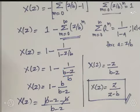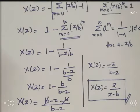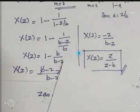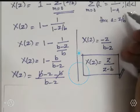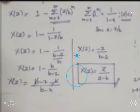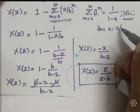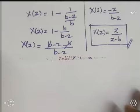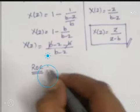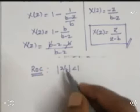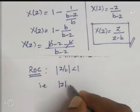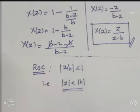Now let us determine the ROC. The summation formula is valid only when |a| < 1, and here a = Z/B, so the condition |Z/B| < 1 means |Z| < |B|. This is our ROC — the region inside the circle of radius B on the Z-plane.